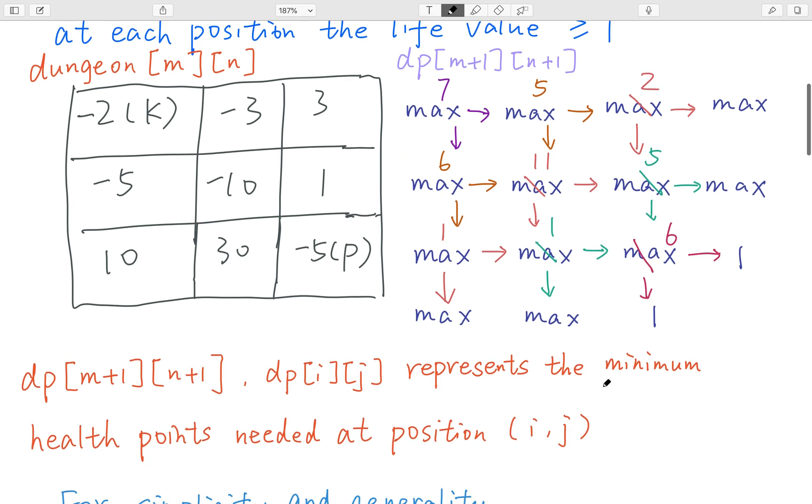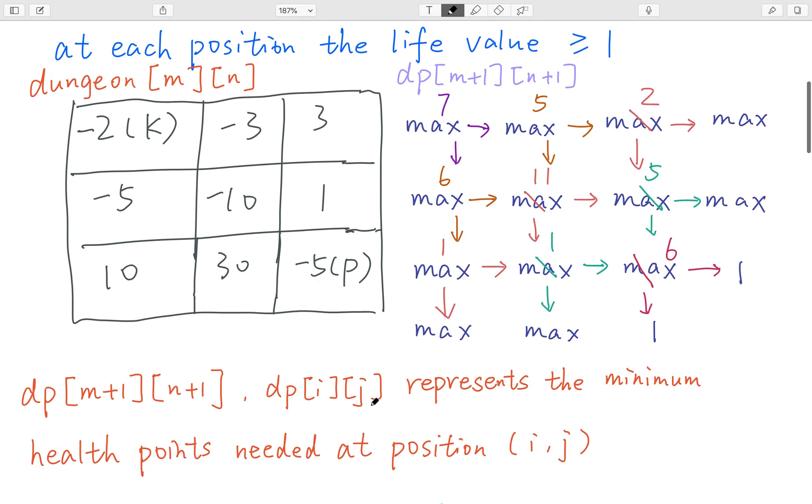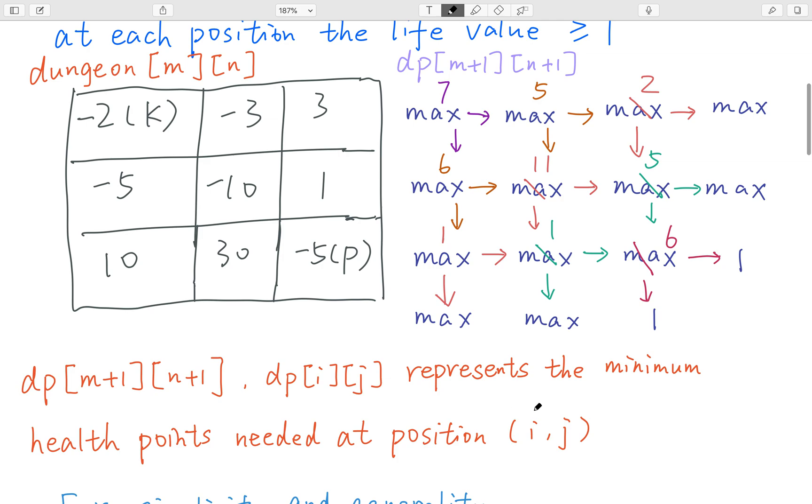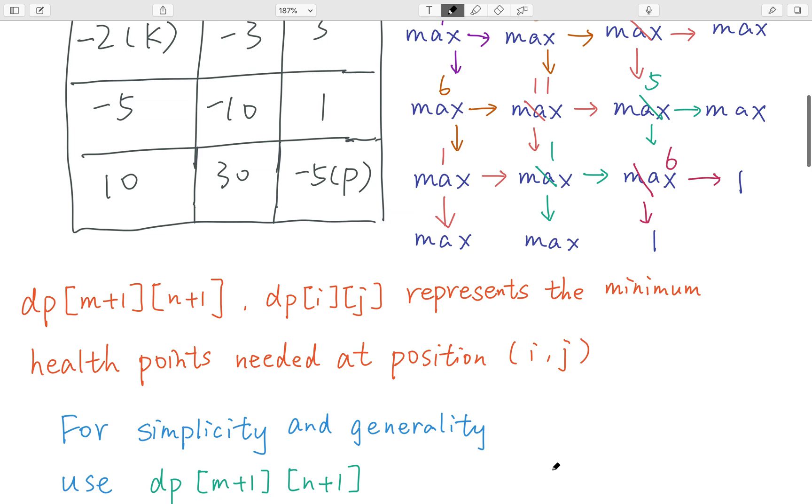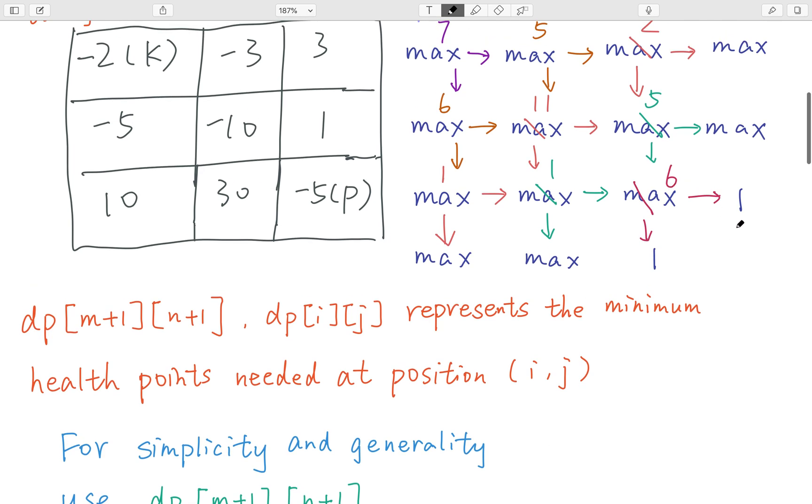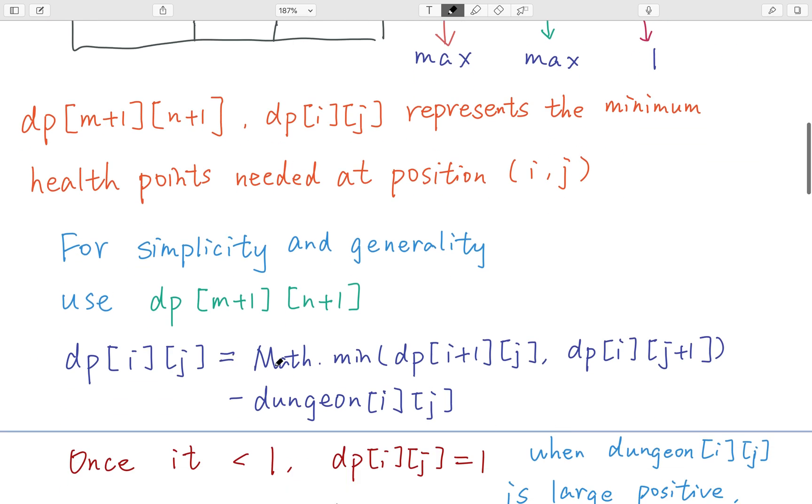So you will know the formula is that dp[i][j], it represents the minimum health point I needed to reach the position i,j. And it's equal to the minimum of its right and the cell below minimum, minus the dungeon[i][j]. This is the formula.